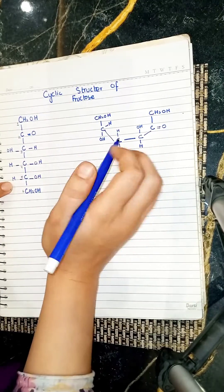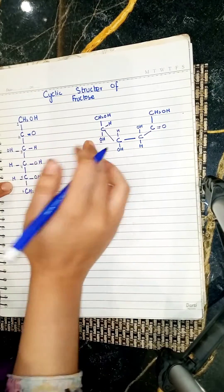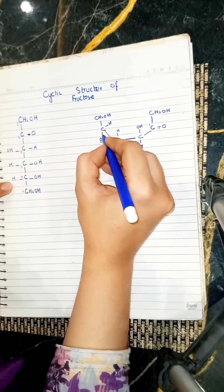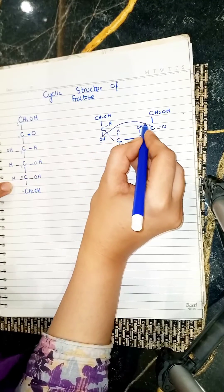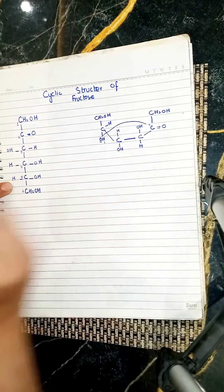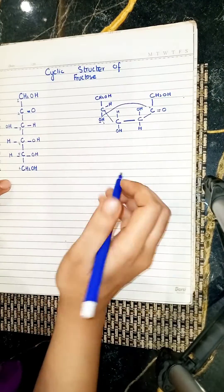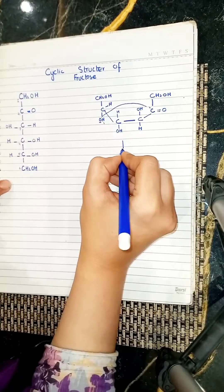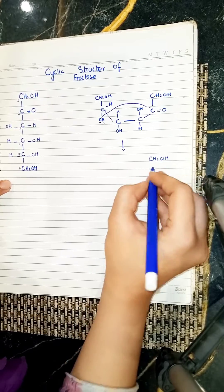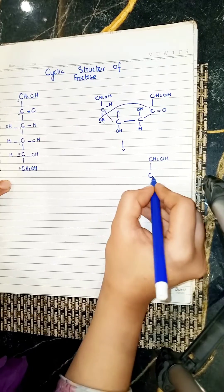Now, how does it make a ring structure? The oxygen at carbon number 5 reacts with carbon number 2. The hydrogen migrates and reacts with this oxygen, and they form a ring structure. CH2OH is at carbon number 2.